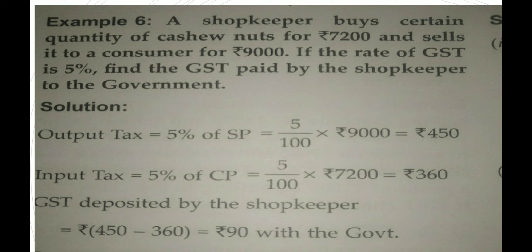Output tax = 5% of SP = 5% of Rs. 9000 = Rs. 450. Input tax = 5% of CP = 5% of Rs. 7200 = Rs. 360. GST deposited by the shopkeeper = Rs. 450 minus Rs. 360 = Rs. 90 with the government.